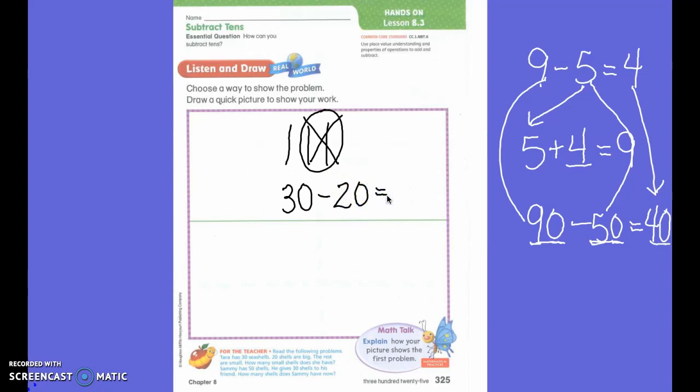Now 30 minus 20 can look like a big number and look really hard. But if we cover up the zeros and look at 3 minus 2, I can see that 3 minus 2 equals 1. But then I need to add my ones place in there and add my 0 back in. So 30 minus 20 equals 10. My picture also shows this. 30 minus 20 equals 10.